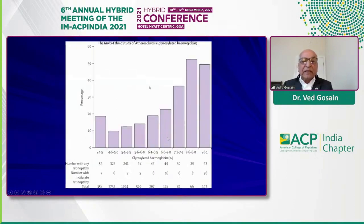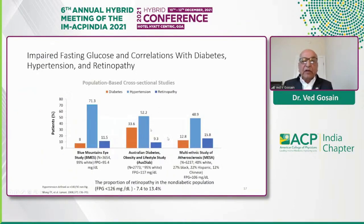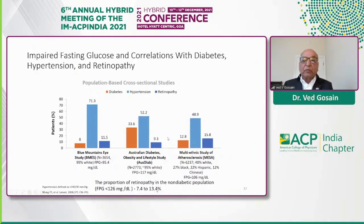If you look at hemoglobin A1C levels below 6, you again have some degree of retinopathy present. The proportion of retinopathy in non-diabetic populations with a plasma glucose level of less than 126 — meaning all prediabetes — is somewhere between 7.4 to 13.4%. In addition, there is a significant increase of hypertension amongst these individuals.